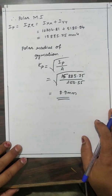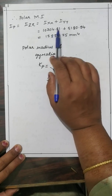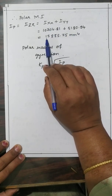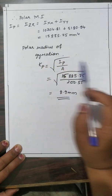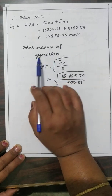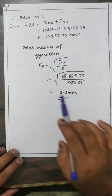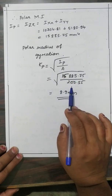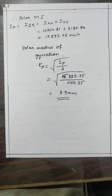The polar moment of inertia IP = IZZ = IXX + IYY = 10,704.81 + 5180.94 = 15,885.75 mm⁴. The polar radius of gyration KP = √(IP / A) = √(15,885.75 / 200.55) = 8.9 mm.